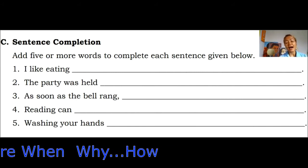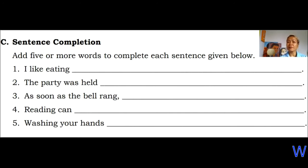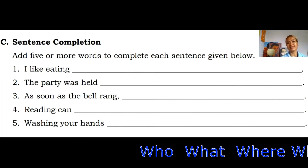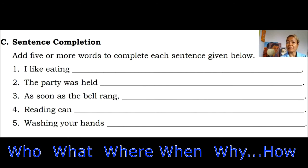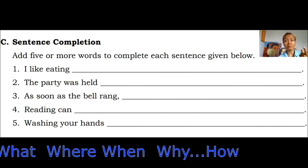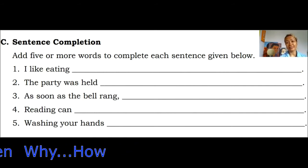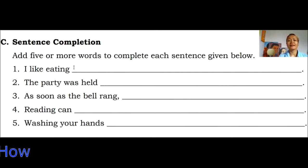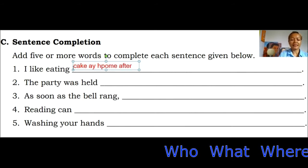Let's look at the first one. It says 'I like eating.' Like eating what? Think about the what, the where, and the when. Even thinking about just those three, you'd get enough information to complete the sentence. So: what — cake; where — at home; when — after dinner. 'I like eating cake at home after dinner.'